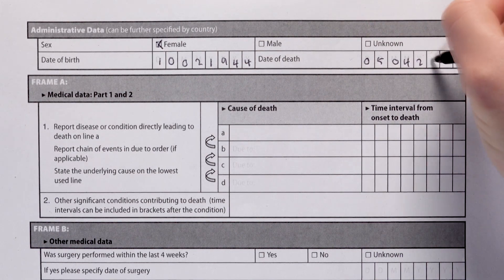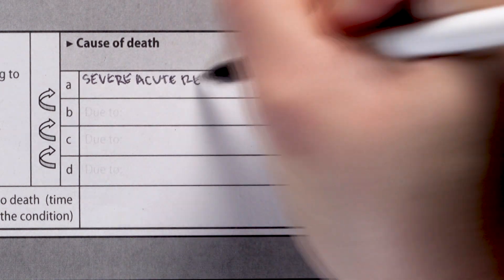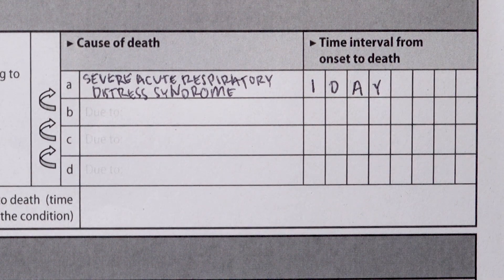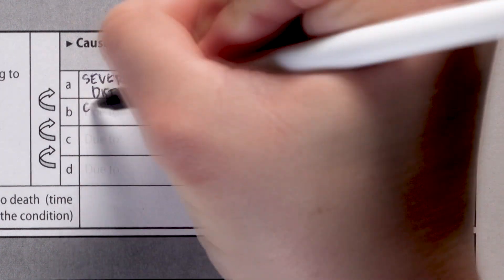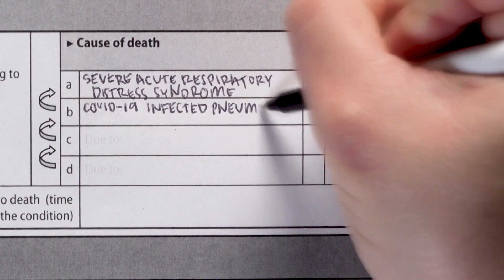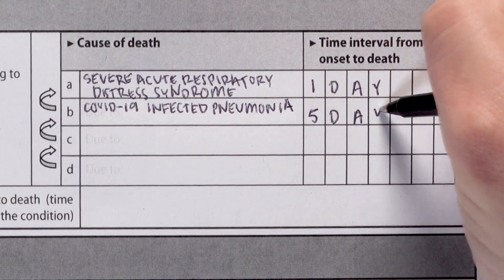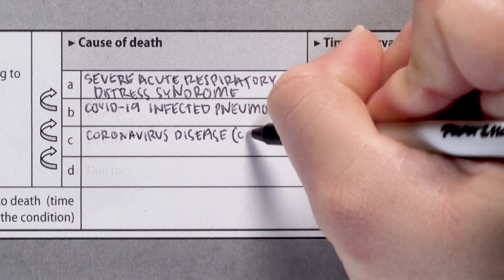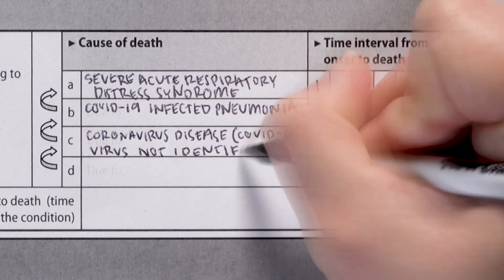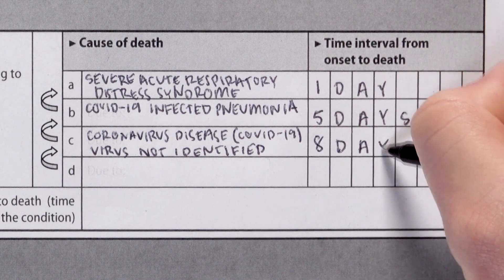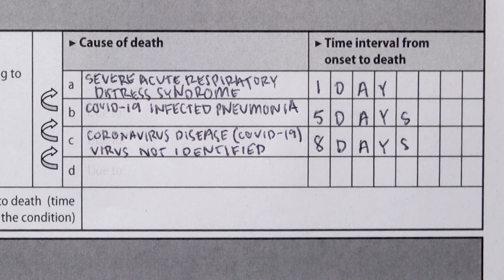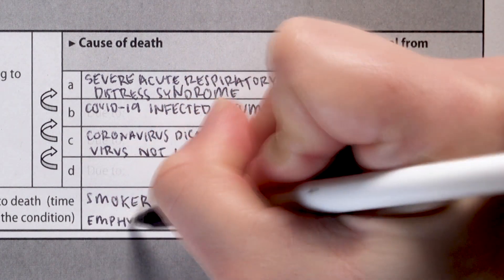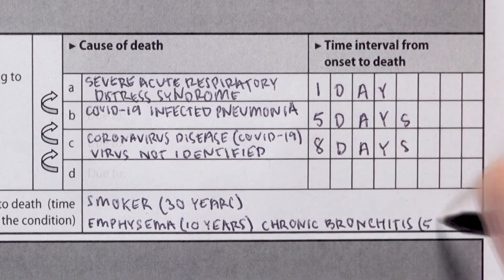In part 1, line 1A, detail the direct cause of death as severe acute respiratory distress syndrome, with 1 day as the time interval from onset to death. In line 1B, detail COVID-19 infected pneumonia, with 5 days as the time interval. In line 1C, detail coronavirus disease (COVID-19), virus not identified, with 8 days as the time interval. In part 2, detail smoker (30 years), emphysema (10 years), and chronic bronchitis (5 years) as significant contributing conditions.